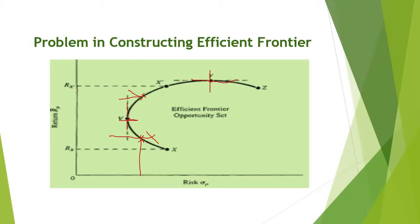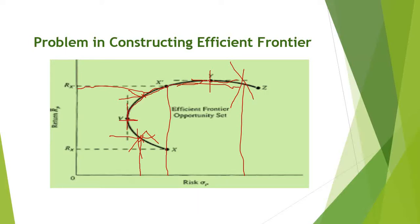After this transition point, for the same level of return you are getting less risk compared to other points, which means those other points are inefficient. Your efficient frontier lies between two key points, and the lower boundary point is known as the minimum variance portfolio or global minimum variance portfolio — the point where you get the minimum risk that can be attained.